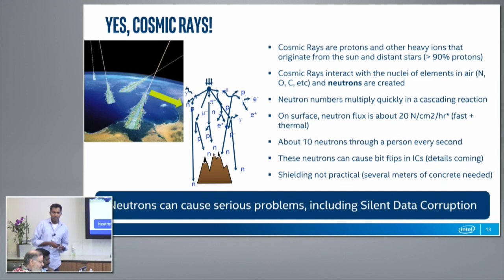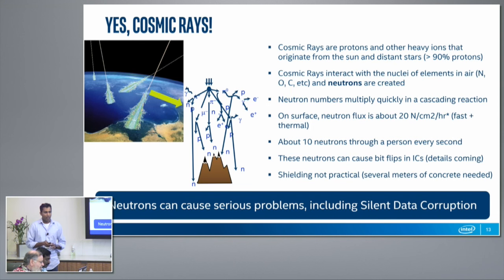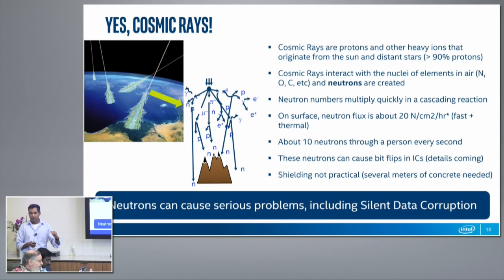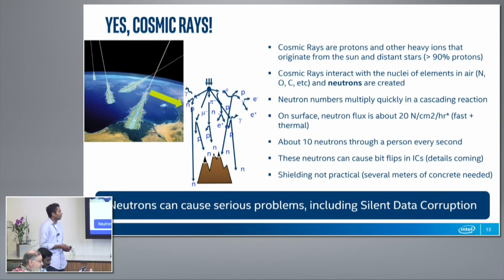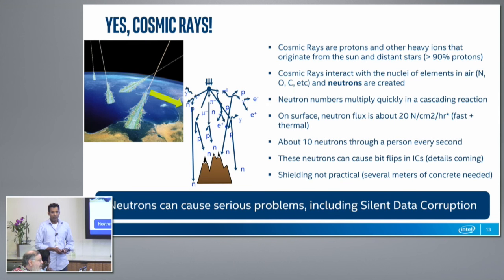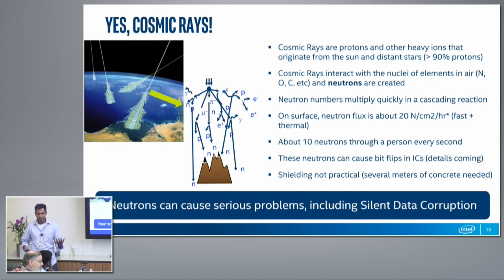It's a cascade reaction, so as you go deeper and deeper into the atmosphere more and more neutrons are created. At some point a maximum flux of neutrons exists at a certain altitude, and then they start getting attenuated as you get closer and closer to the Earth's surface, so the numbers start to decrease again. But still, on the surface of the Earth, we have a very large flux of neutrons — we're literally swimming in them.